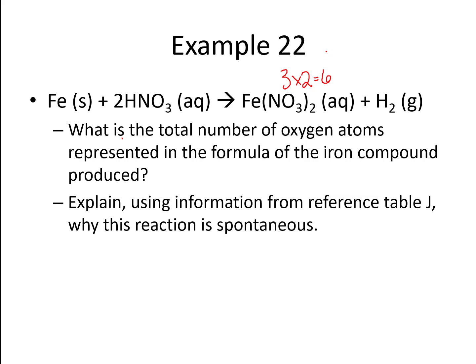Now the second part of this question is really the more interesting one. Explain using information from reference Table J why this reaction is spontaneous. And there's that word again. Now remember the rule on Table J, anything that is above hydrogen will react spontaneously. So try to give this one an answer. If you said that according to reference Table J, iron is more active than hydrogen and thus the reaction is spontaneous, you would be right. So if that metal wasn't iron, if it was something lower like copper, silver, or gold, we would not get a spontaneous reaction.